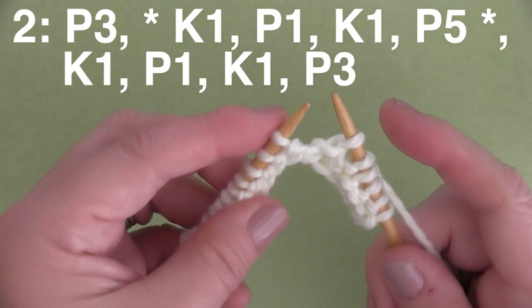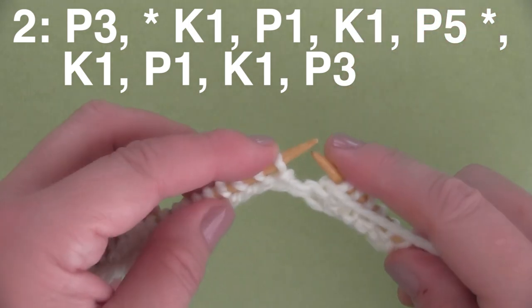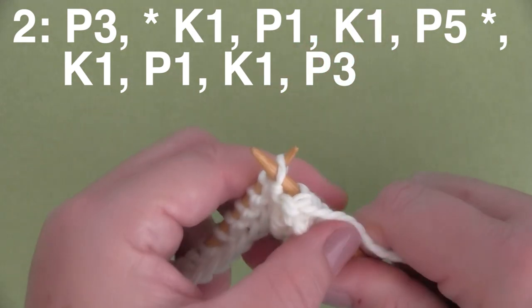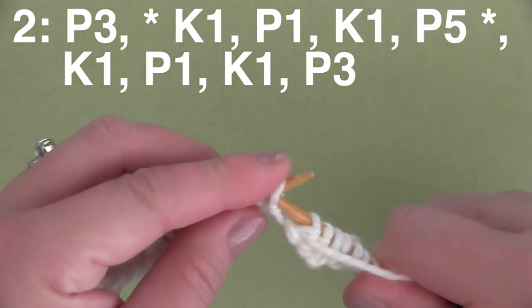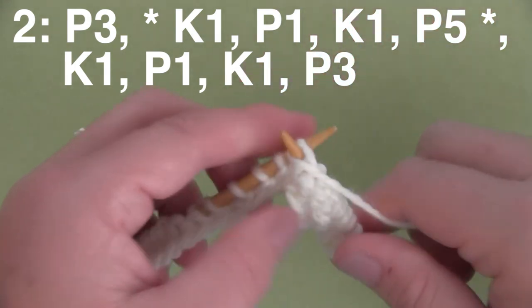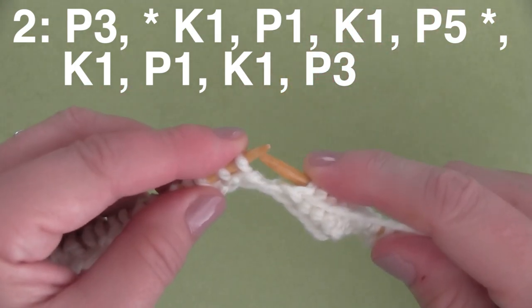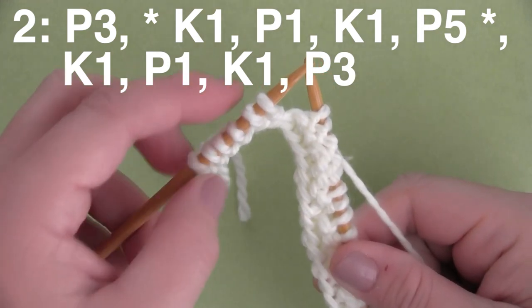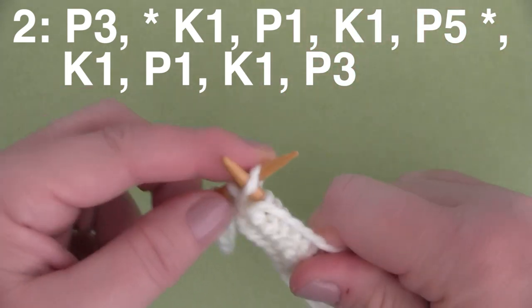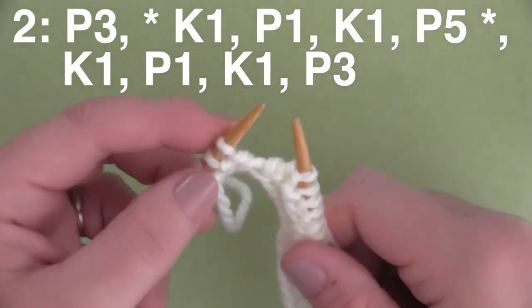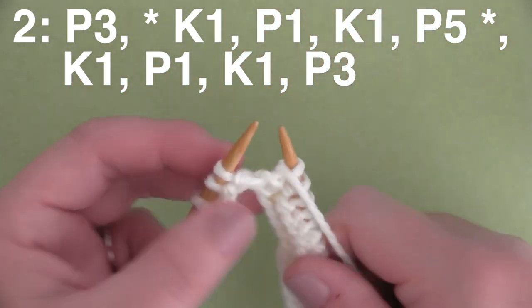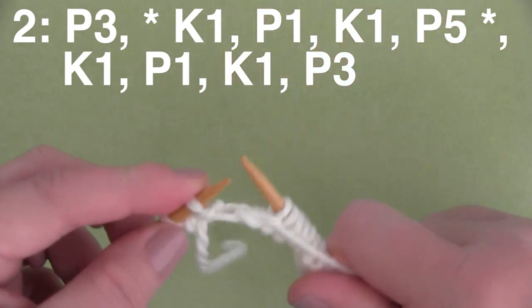And then we are purling 5 more stitches. And this is the repeat pattern that you do all the way down the row. And here on Row 2, we're going to be doing this repeat until we have 6 stitches remaining on our needle. And at that point, it is K1, that's knitting 1. And then we're going to purl 1 stitch, and then we're going to knit 1 stitch. And then finishing up Row 2 with P3, that is purling 3 stitches.